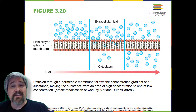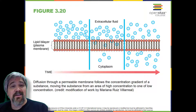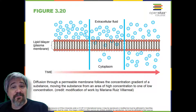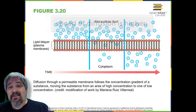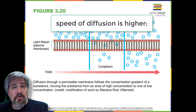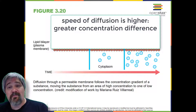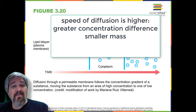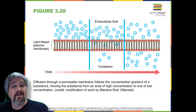Each separate substance in a medium, such as the extracellular fluid, has its own concentration gradient independent of the concentration gradients of other materials, and each substance will diffuse according to that gradient. Several factors affect the rate of diffusion. The extent of the concentration gradient: the greater the difference in concentration, the more rapid the diffusion. The closer the distribution gets to equilibrium, the slower the rate of diffusion becomes. Mass of the molecules diffusing: more massive molecules move more slowly because it is more difficult for them to move between the molecules of the substance they are moving through, and therefore they diffuse more slowly.